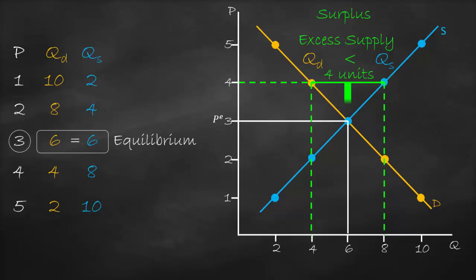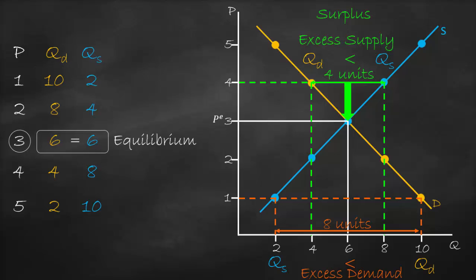What is the impact of a surplus? Every time we have a surplus, it results in lower prices until we reach equilibrium. Now let's look at the opposite: what if we have a price level below equilibrium? At price of 1, it intersects the supply curve giving a quantity supplied of 2, and intersects the demand curve giving a quantity demanded of 10. Quantity demanded is bigger than quantity supplied by 10 minus 2 equals 8 units — so we have excess demand of 8 units, which means a shortage. Every time we have a shortage, price will go up until we reach equilibrium.